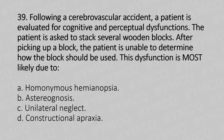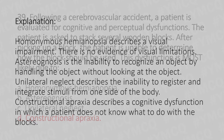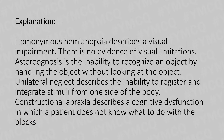Option D: Constructional Apraxia. Homonymous Hemianopsia describes a visual impairment, and there is no evidence of visual limitation here. Astereognosis is the inability to analyze an object by handling it without looking at it. Unilateral Neglect describes the inability to register and interpret stimuli from one side of the body. Constructional Apraxia describes a cognitive dysfunction in which a patient does not know what to do with the blocks.